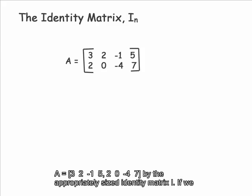Let's go ahead and multiply the matrix A equals row 1: 3, 2, negative 1, 5, and row 2: 2, 0, negative 4, 7 by the appropriately sized identity matrix I.